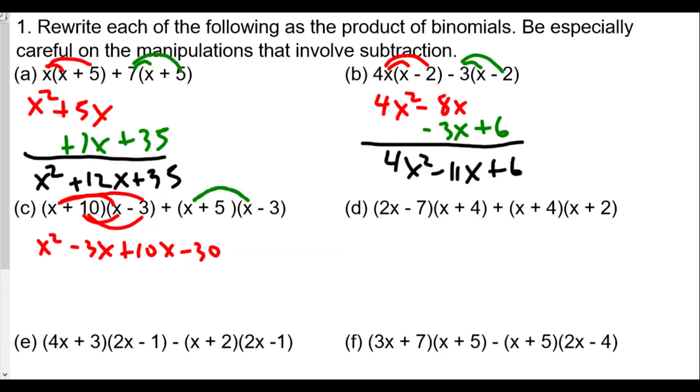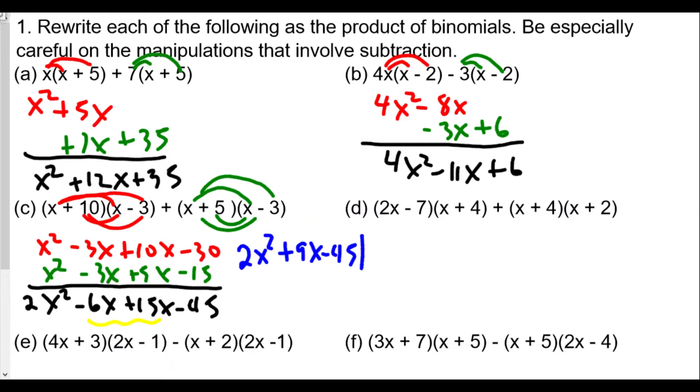Then we multiply x times x to get x squared. We have x times negative 3 which is negative 3x, 5 times x is plus 5x, and 5 times negative 3 is negative 15. When we combine these together, we get 2x squared minus 6x plus 15x minus 45, but we can combine these two terms together to get a final answer of 2x squared plus 9x minus 45.